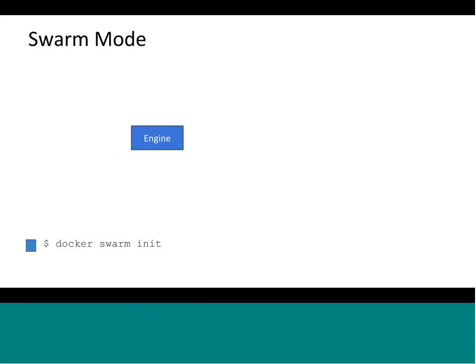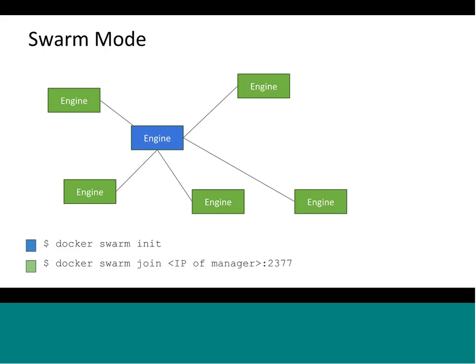Let me explain what swarm mode is. Typically you start with one machine running the Docker engine, and you type Docker swarm init. That puts the machine into swarm mode, meaning it can cluster with other engines also running in swarm mode. On a second machine, you type Docker swarm join and give it the IP of the first machine — now you have a two-node cluster. You can repeat this process; here I'm showing a total of six engines joined to the cluster.